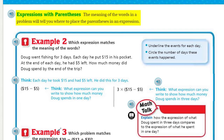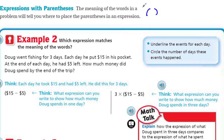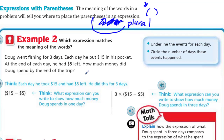Now we have expressions with parentheses. The meaning of the words in a problem will tell you where to place the parentheses in an expression. A single one of these brackets is a parenthesis, but when we have two of them, that's plural, so we call them parentheses. Now, Example Two: which expression matches the meaning of the words?